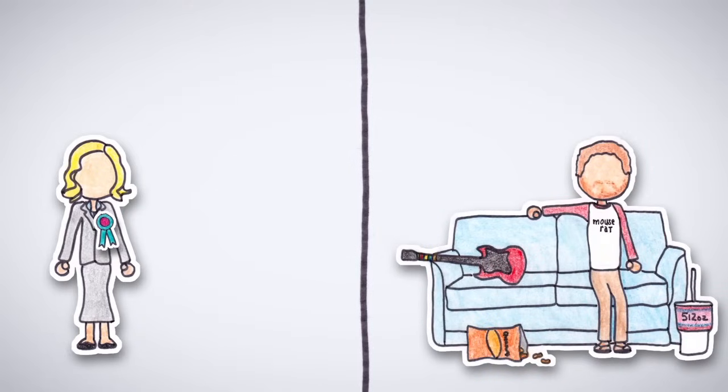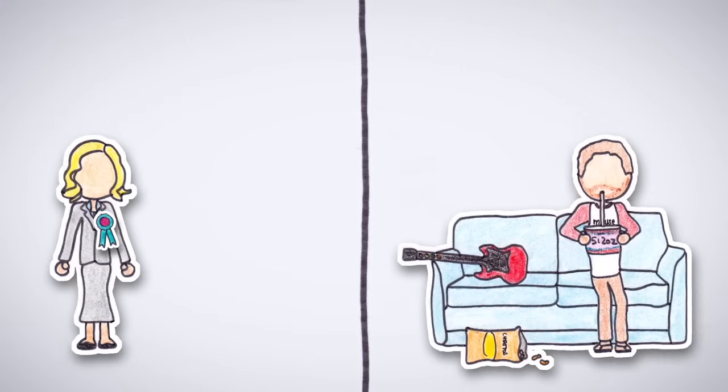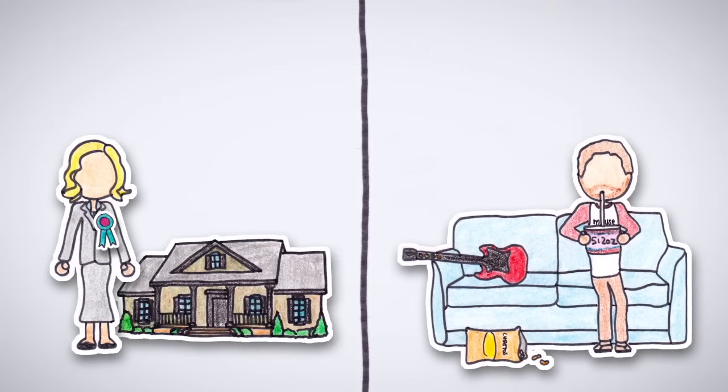Leslie is fiscally responsible. She puts a portion of her salary into a savings account every month, always pays her credit card bills on time, and has never missed a payment on the mortgage of her home or her student loans.